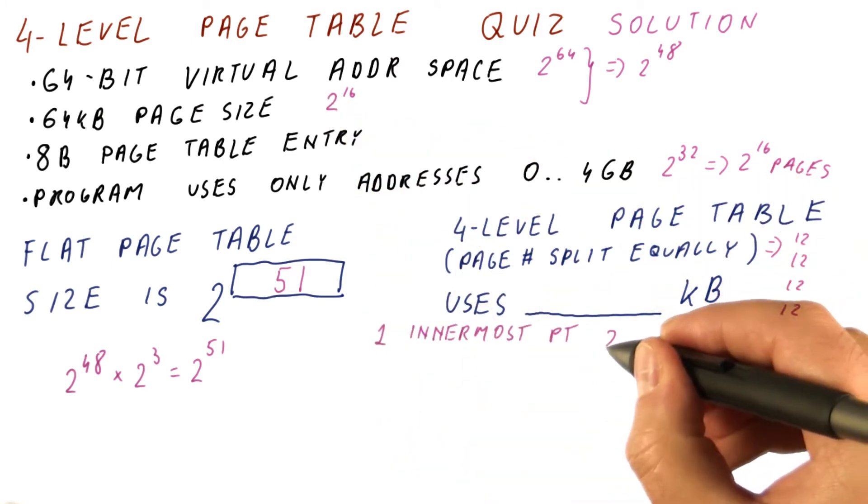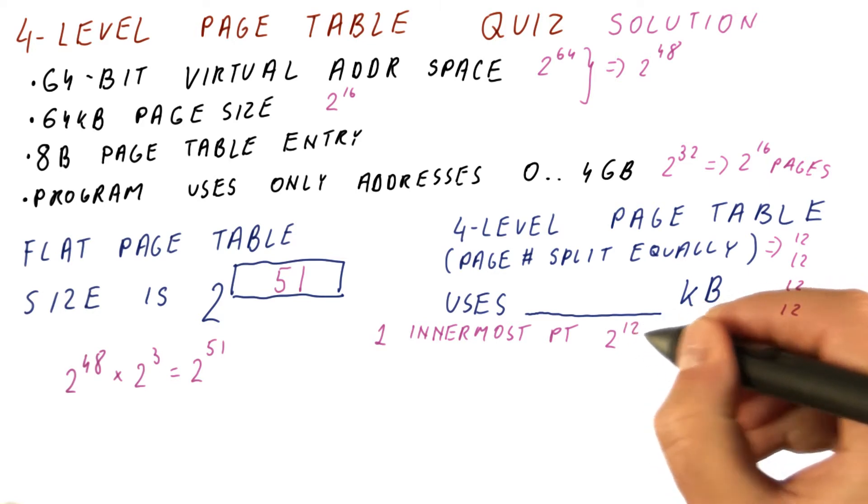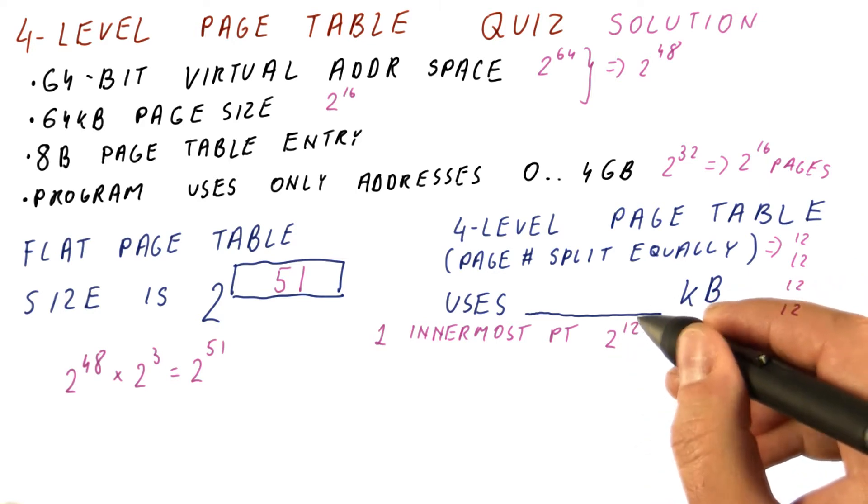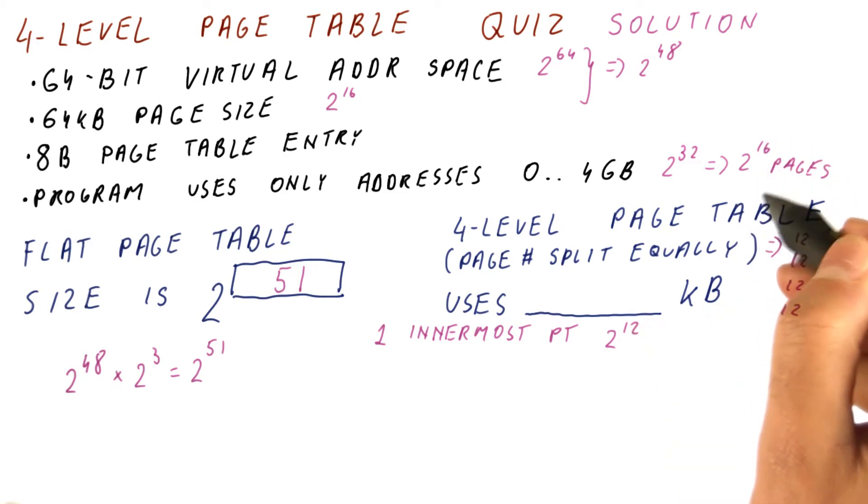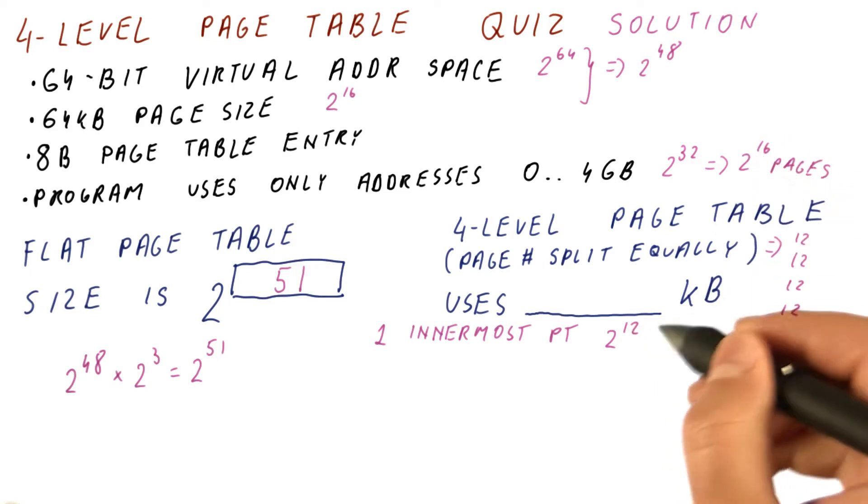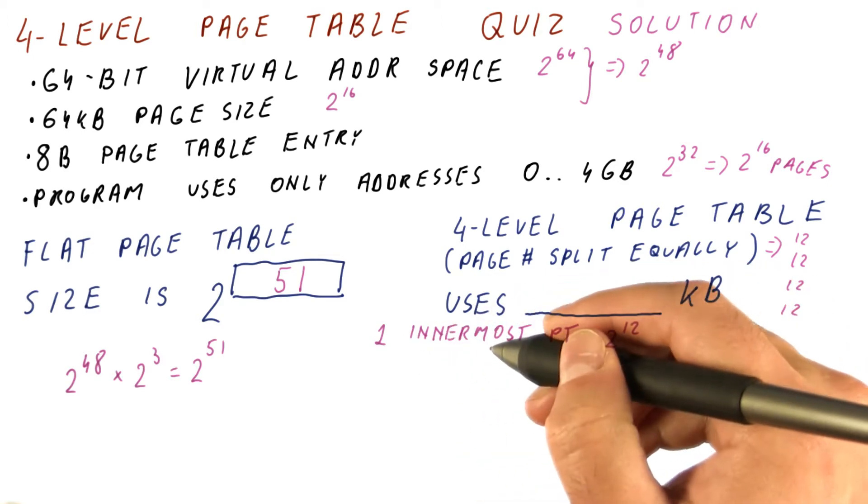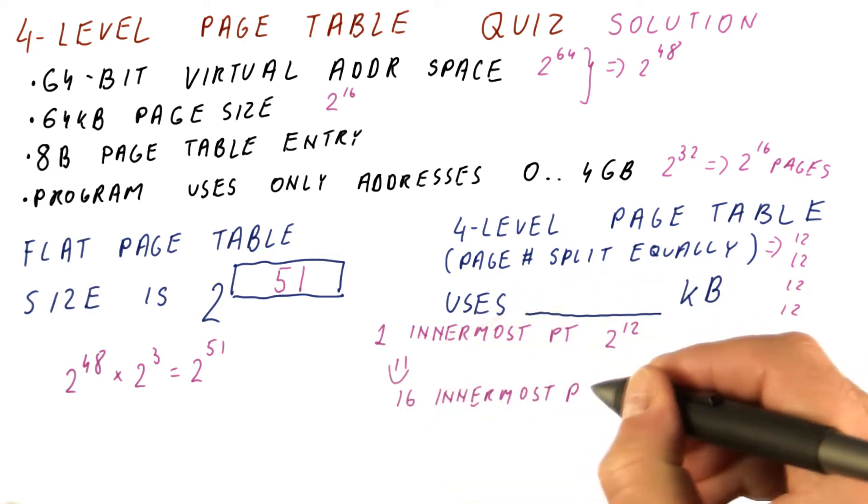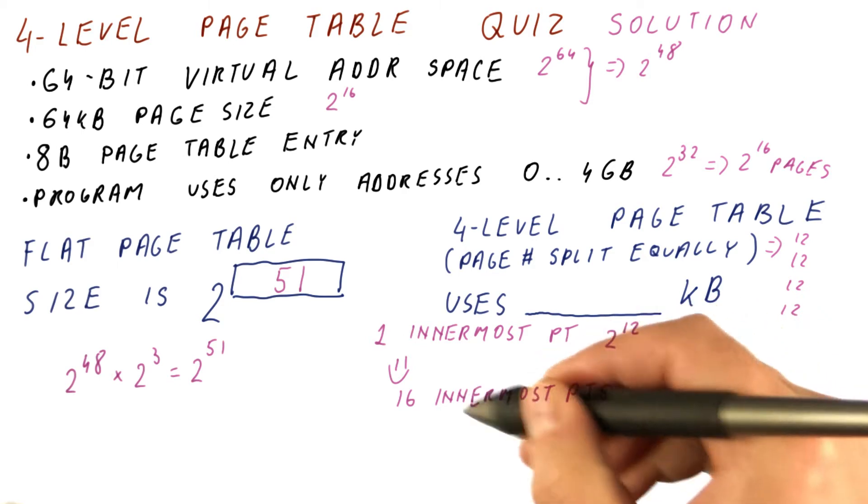One innermost page table has 2 to the 12th entries, so it covers 2 to the 12th pages. To cover 2 to the 16th consecutive pages, we need 2 to the 4th of these innermost page tables. So now we know that we have 16 innermost page tables.